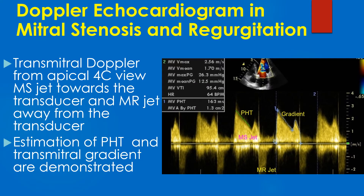Transmitral Doppler from the apical four-chamber view shows the jet of mitral stenosis towards the transducer and the mitral regurgitation jet away from the transducer, that is below the baseline. Estimation of pressure half-time and transmitral gradient are demonstrated.